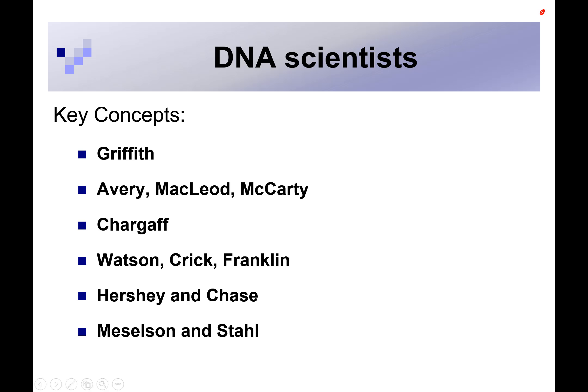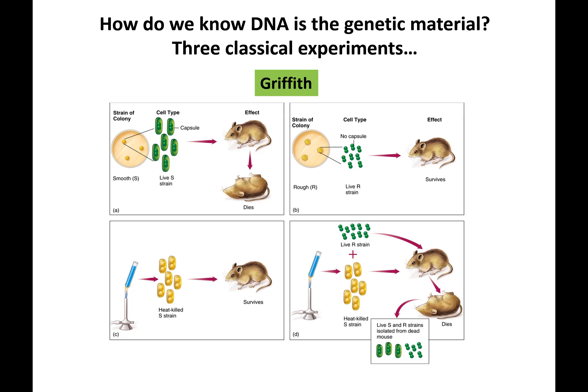This lecture covers scientists who helped us discover that DNA was the genetic material. Griffith was working with two types of bacteria: a smooth strain that was virulent and could cause disease, and a rough strain that was non-virulent and did not cause disease.